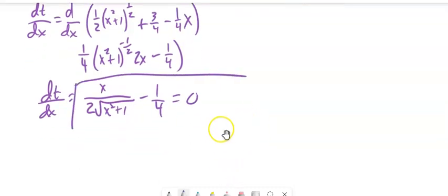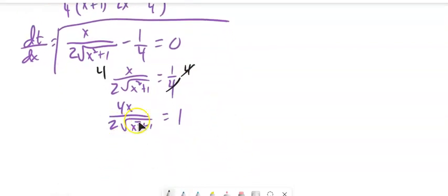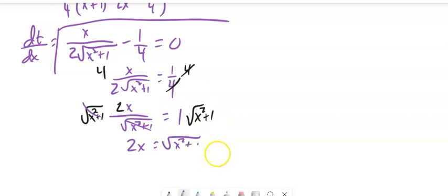So as I go to solve that, I'll add a fourth to both sides. And then now, I'm going to multiply both sides by 4, which cancels this out. So notice that gives me 4X over 2 times the square root of X squared plus 1. How about I multiply both sides by this denominator as well? And how about I just reduce that first? Now, I'll just multiply both sides by that. So here it divides out. So I've got 2X equals square root of X squared plus 1.